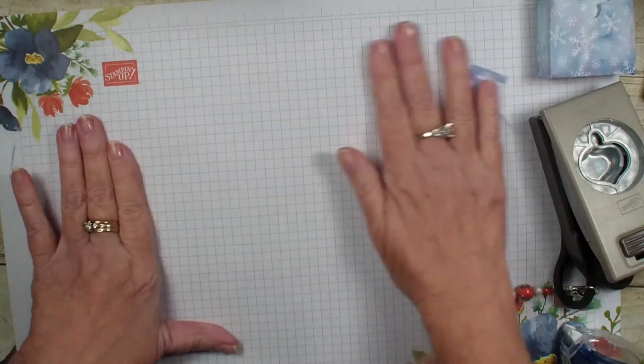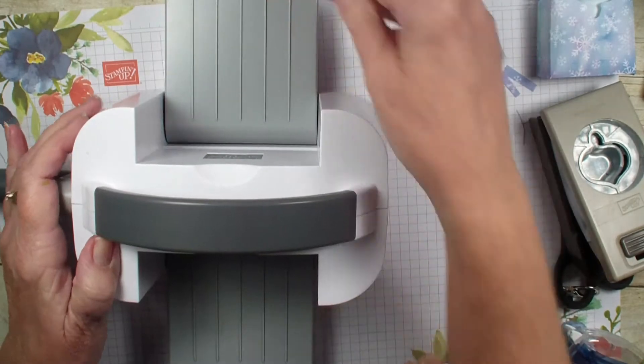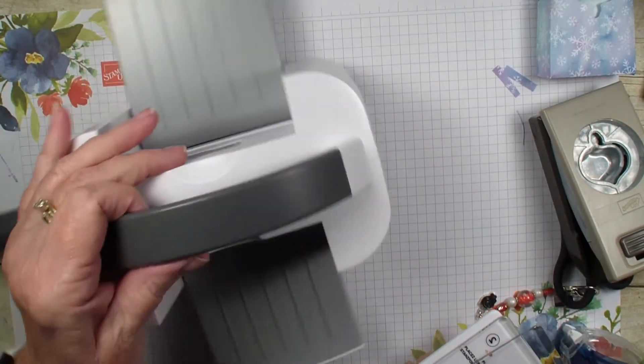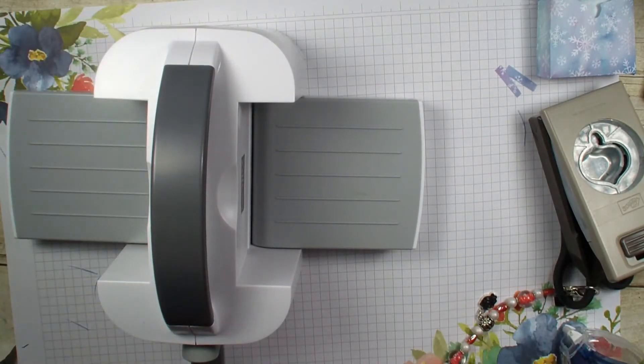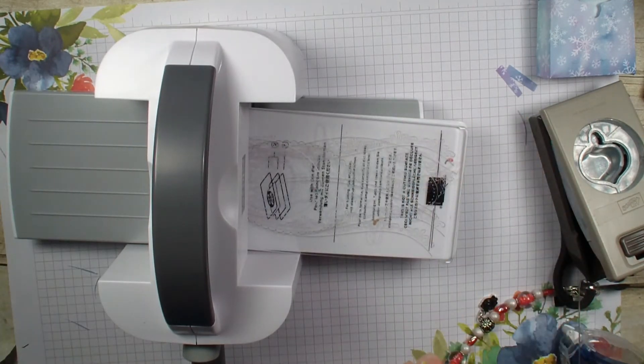What I am going to bring in is my Stampin' Cut Emboss. This is the mini one. I am so in love with this one because I can leave it right on my table and it is not any big deal to pull it out and do some embossing.